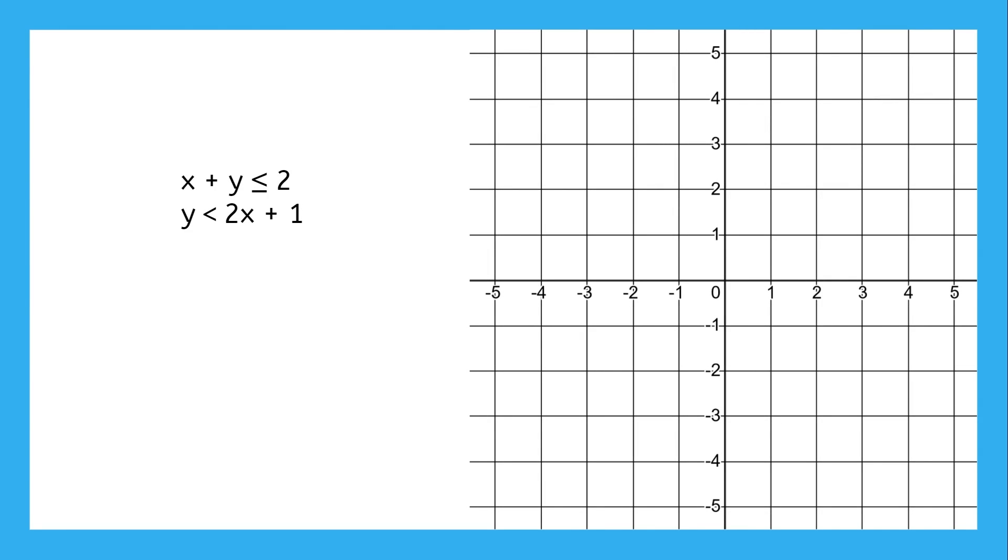Since the first inequality is in standard form, we'll graph it by the intercepts. Ignore the x-term to get the y-intercept, and ignore the y-term to get the x-intercept. It's an or equal to inequality, so the line will be solid.